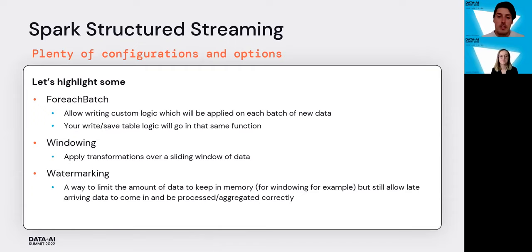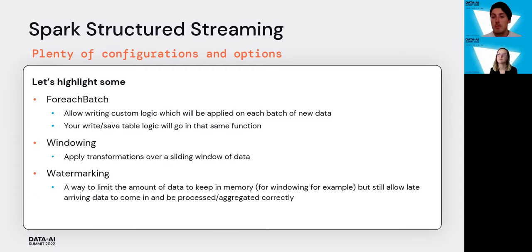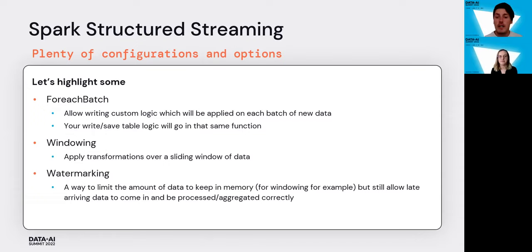Another function is the forEachBatch function, which allows you to write custom logic — any logic you can write in Spark — applied on each batch of new data. So if six new rows come in and you want to process them in a certain way, you use forEachBatch to do your computations, and also to write or save your data to a table.